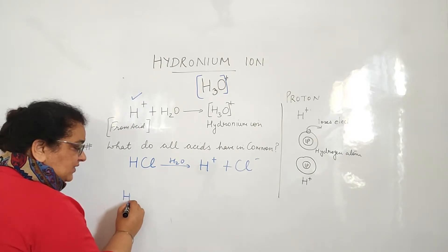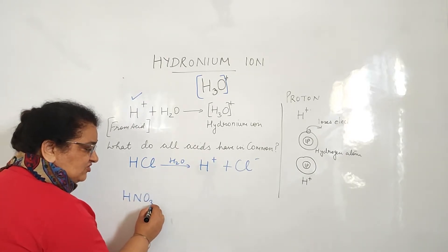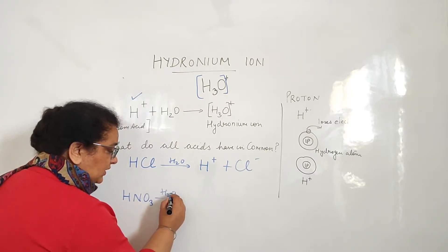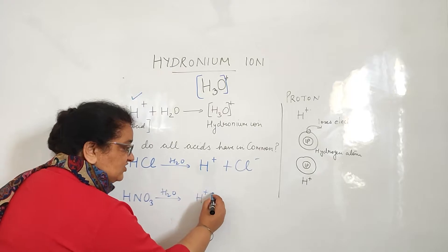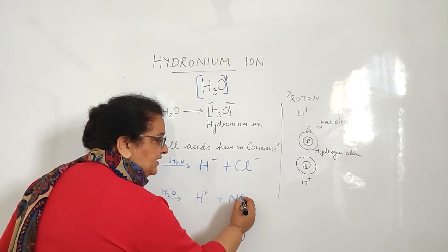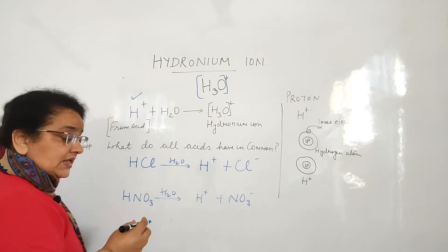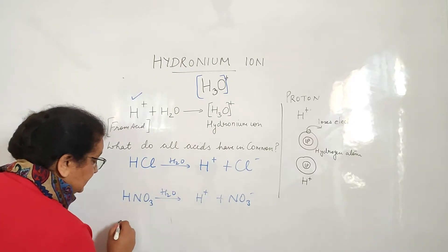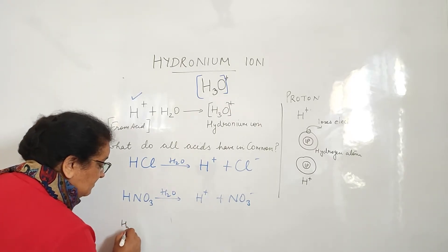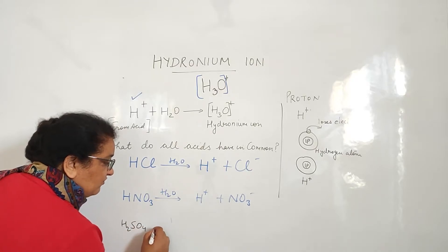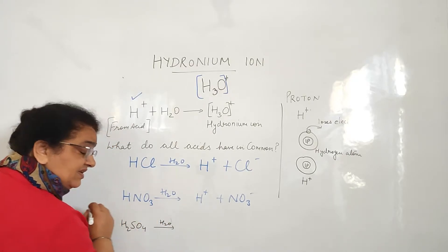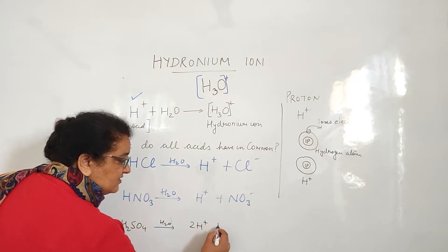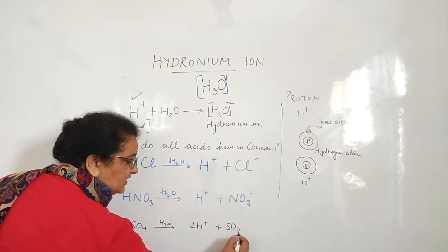Next acid: nitric acid, HNO3. When it comes in contact with water, it will release H-ion plus nitrate ion. Next, sulfuric acid. Sulfuric acid, when it is mixed with water, it will release 2 H-ions and 1 sulfate ion.